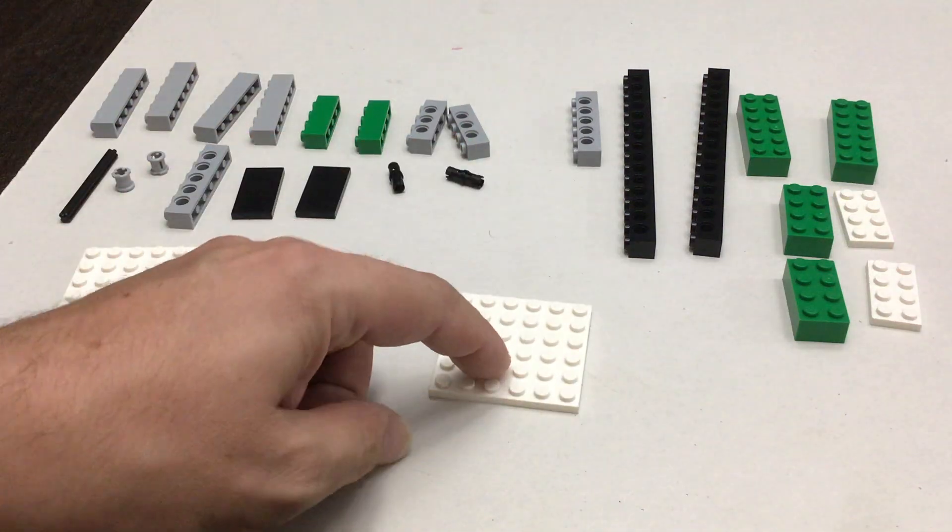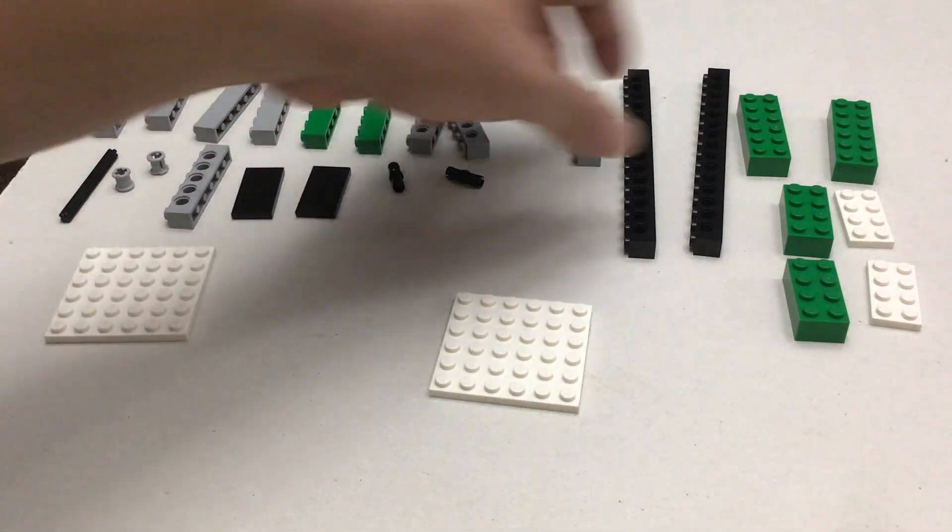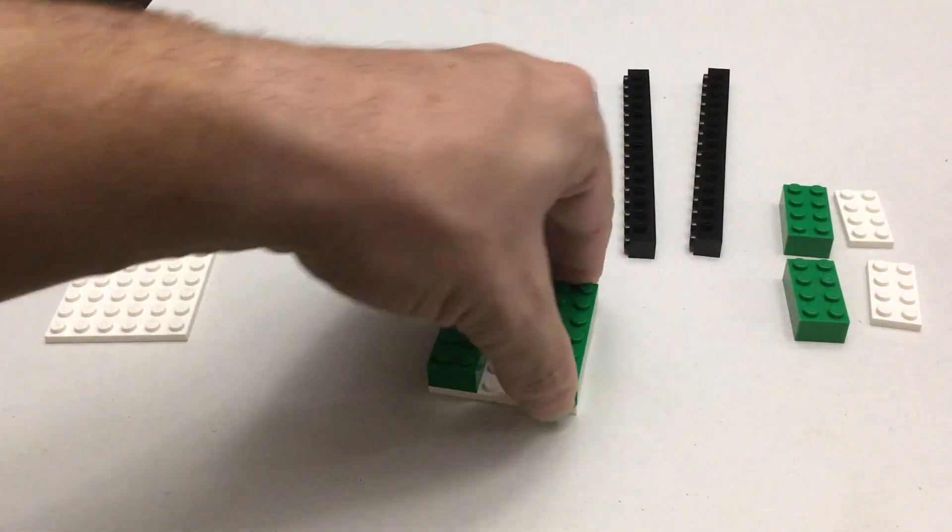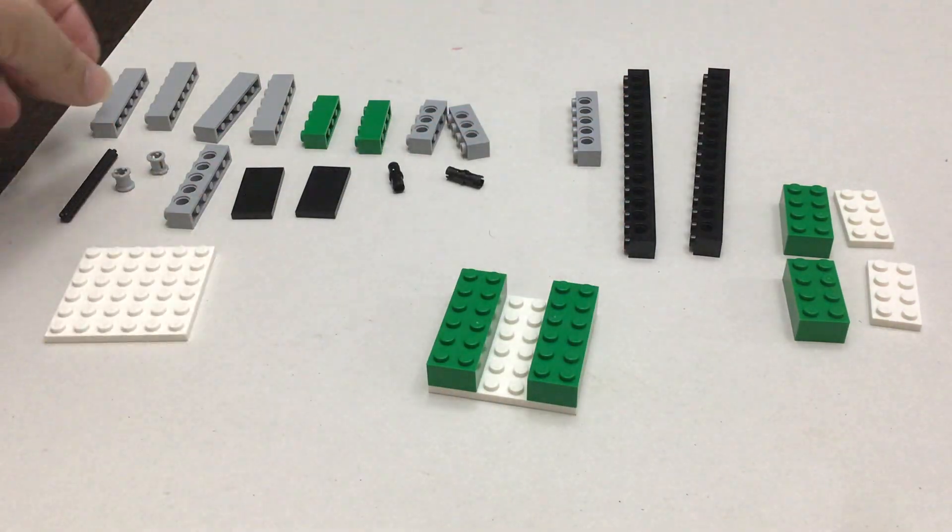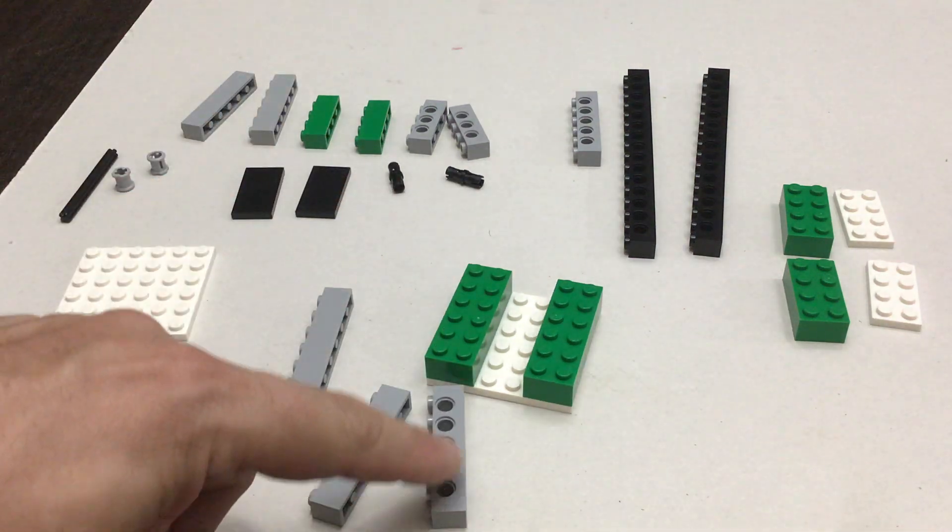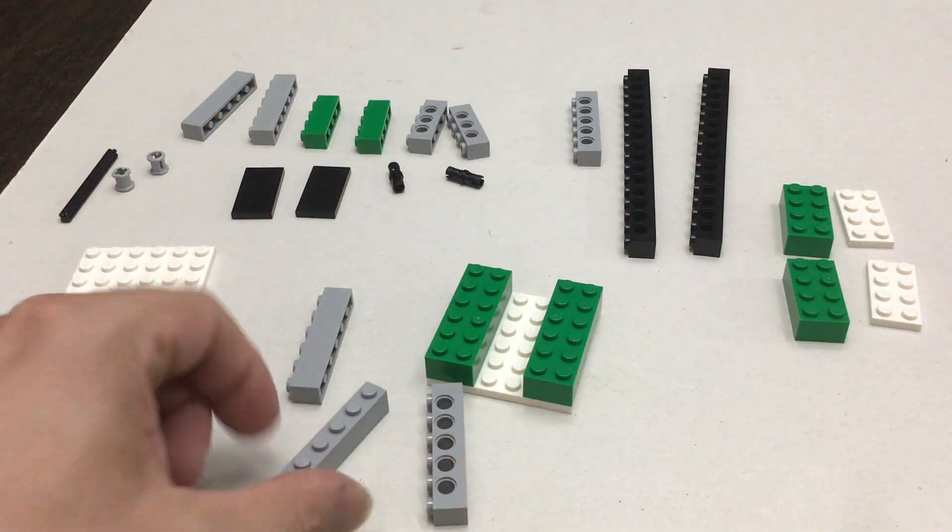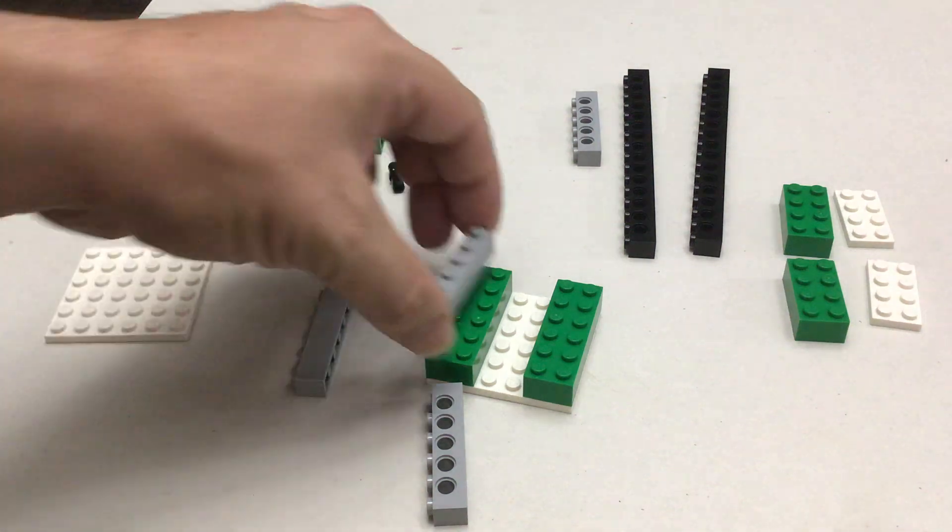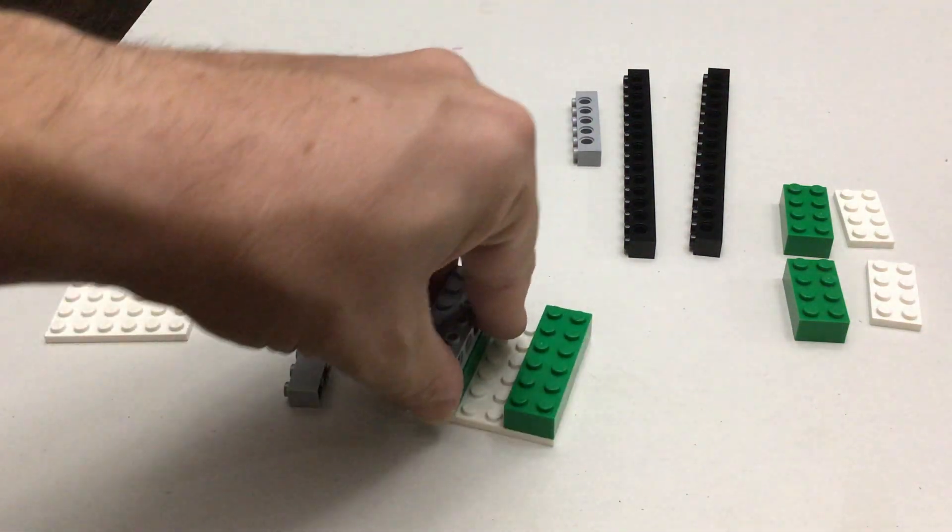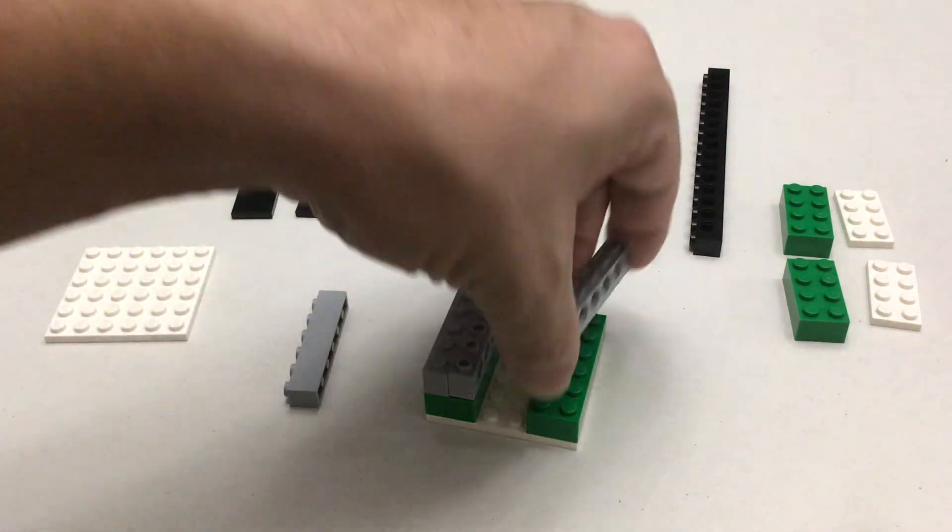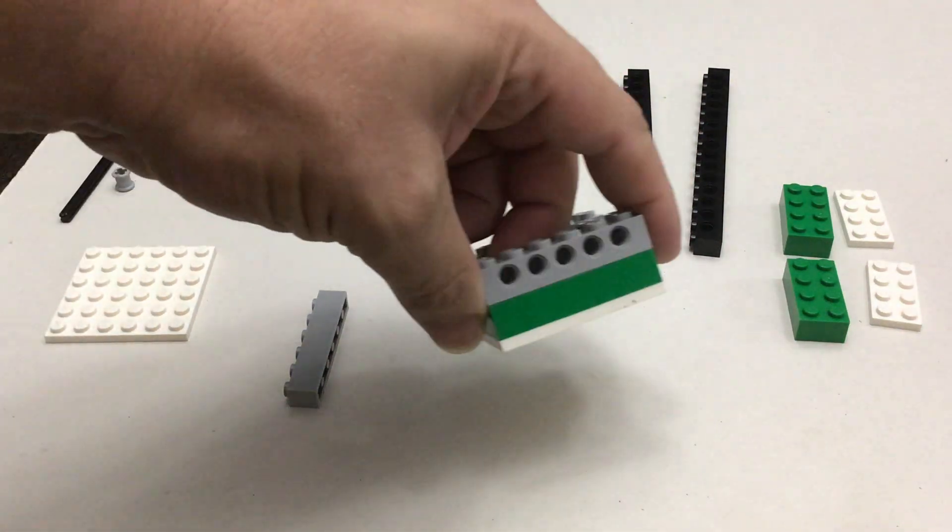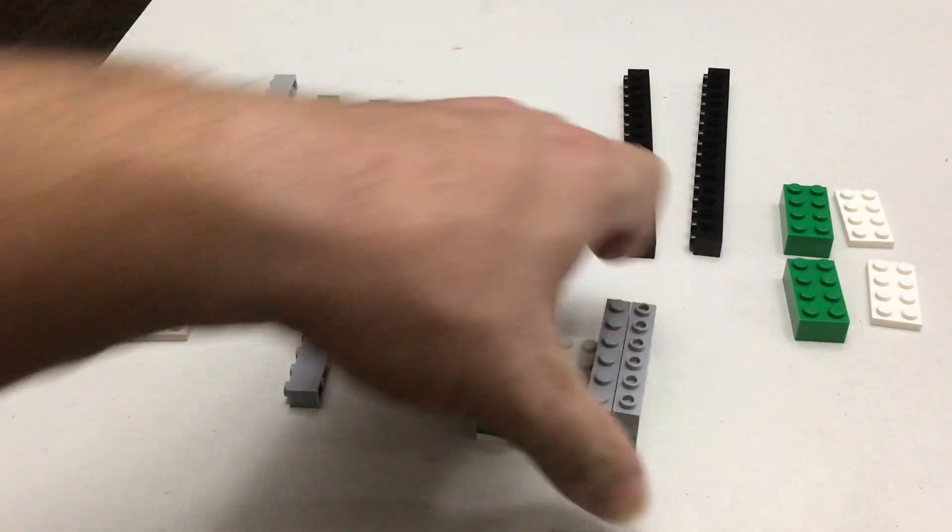We're going to start off with a 6x6 base plate and then add some 2x6s. It doesn't really matter whether you take the Technic brick with the holes or just the 1x6 without. We're just using them for supports in this model. We're not going to be putting anything inside the holes, so it doesn't matter which side they go on. They can go on the outside like here or on the inside like here.